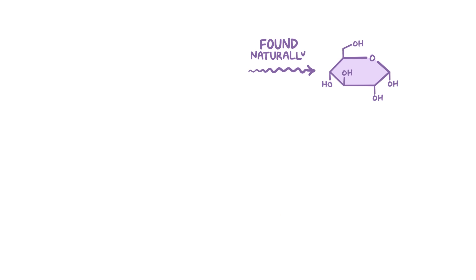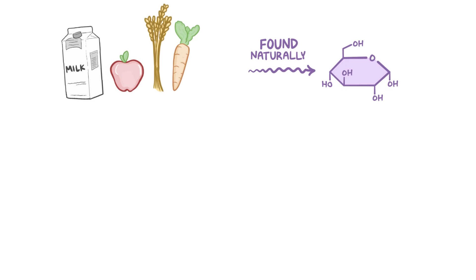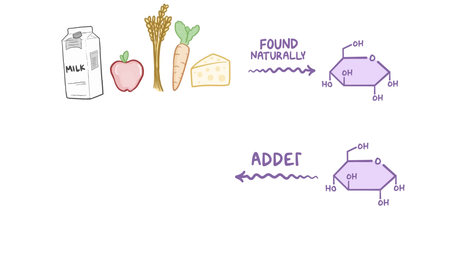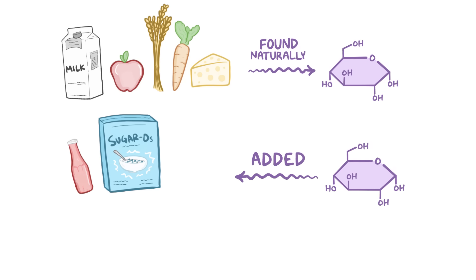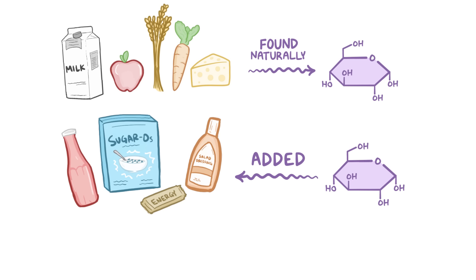Sugars are found naturally in plants like fruits, vegetables, and grains, as well as animal products like milk and cheese. Added sugars are the sugars that get added to foods like cereals, ketchup, energy bars, and even salad dressings. Even if the sugar being added comes from a natural source like sugarcane or honey, it's still considered an added sugar.